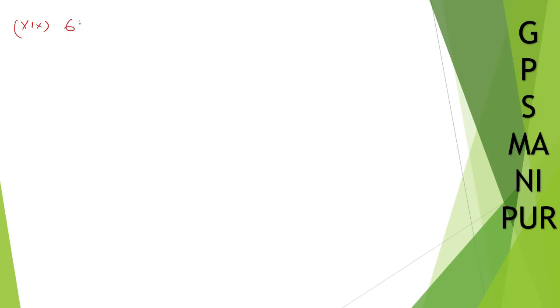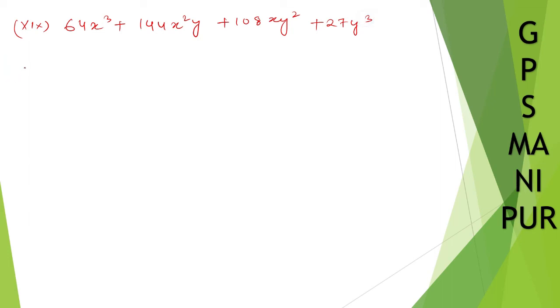Now let us do Question 19: 64x³ plus 144x²y plus 108xy² plus 27y³. Solution: 64 is the cube of 4, since 4³ = 64. So 64x³ = (4x)³.